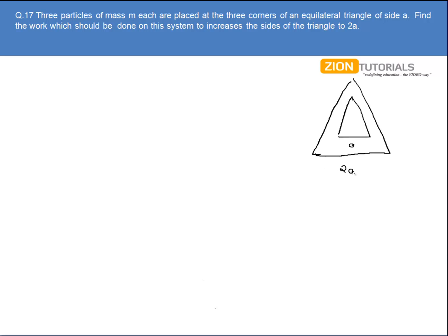Initially there was some gravitational potential energy stored in the smaller equilateral triangle. Then some work is performed on it to make it a larger equilateral triangle, and so there will be a new gravitational potential energy.